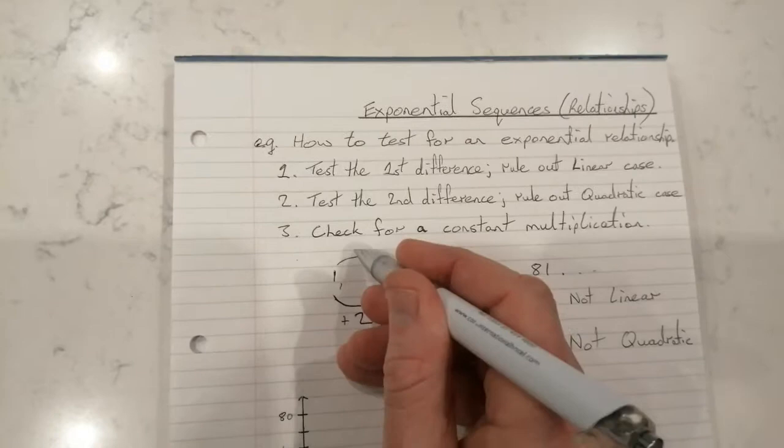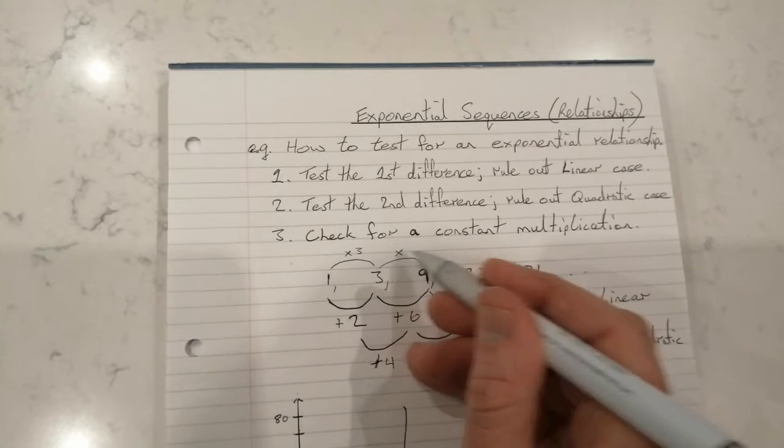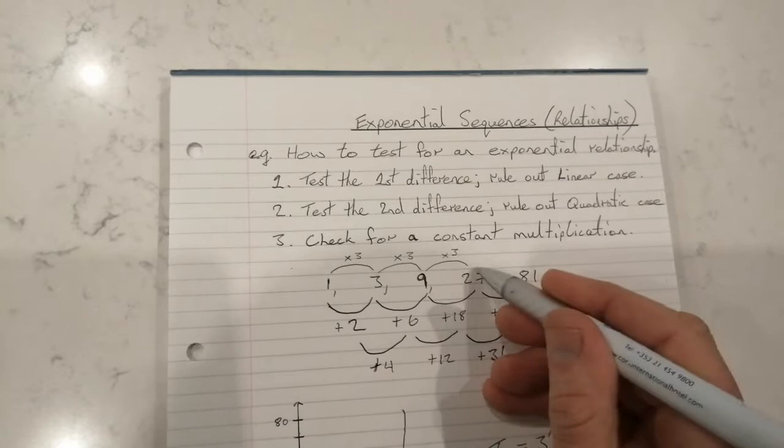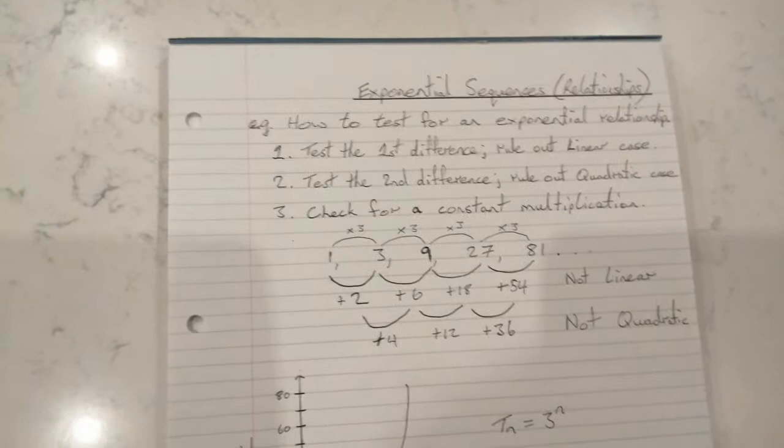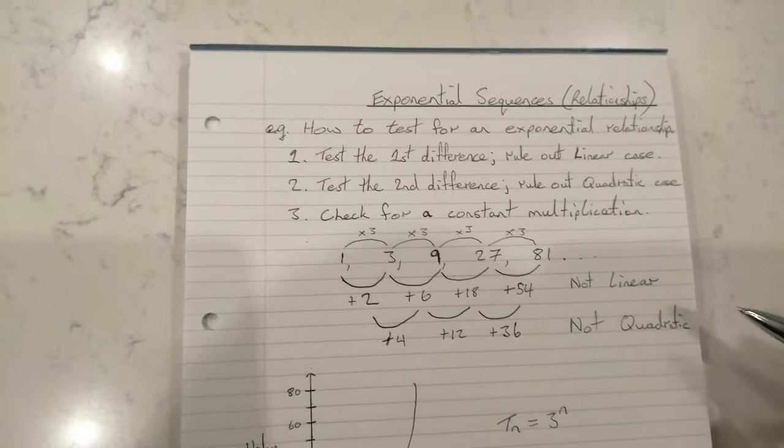But in this case, when we do our third test, we can check for multiplication. Going from this to this we're multiplying by three. Going from this to this again, we can see that we're multiplying by three. This to this, multiplying by three. Three nines are twenty-seven, and again multiplying by three.